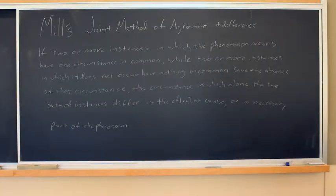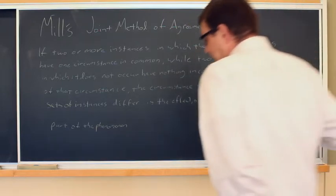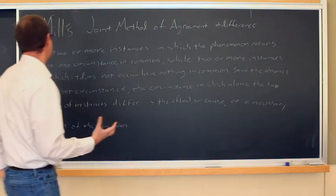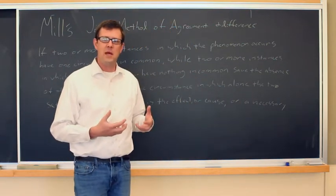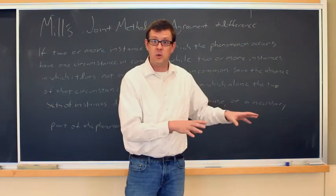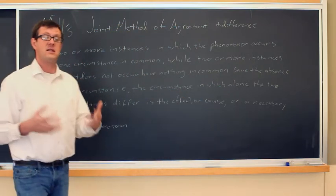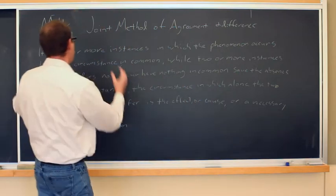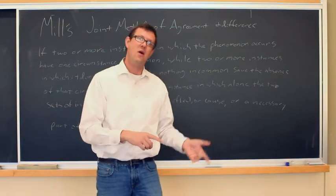Mill's joint method of agreement and difference: if two or more instances in which the phenomenon occurs have one circumstance in common, while two or more instances in which it does not occur have nothing in common save the absence of that circumstance, the circumstance in which alone the two sets of instances differ is the effect or cause or necessary part of the phenomenon. Basically, the one thing in common in the group that has the symptoms, which the group without symptoms doesn't have, must be the cause, effect, or necessary part of the cause.